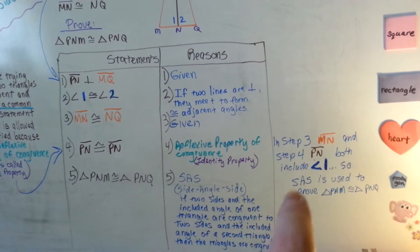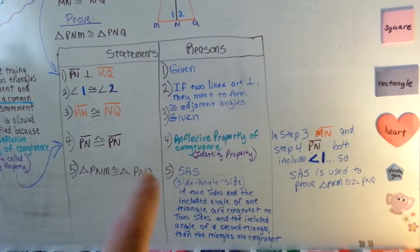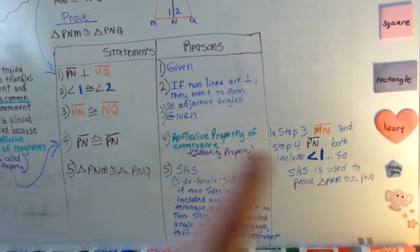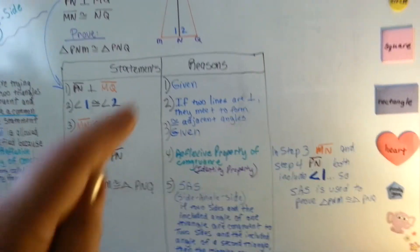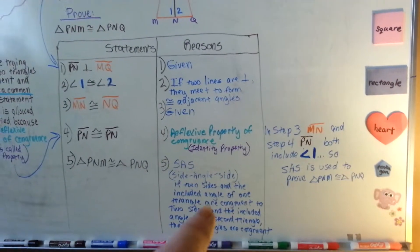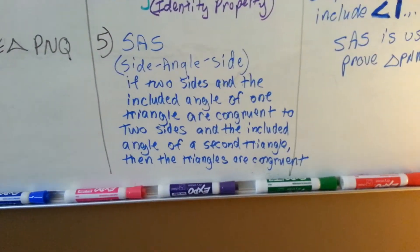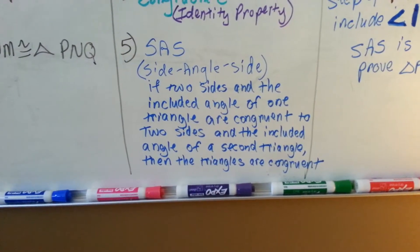They both, MN and PN, both include angle one. So SAS, side angle side, is used to prove that these two triangles are congruent. Do you understand that because we used MN in this step and PN in this step and they both include angle one, we were able to use SAS which we covered in our previous video.